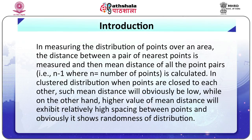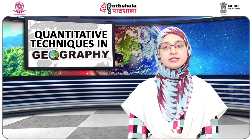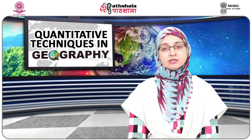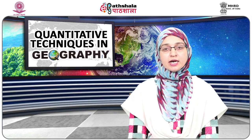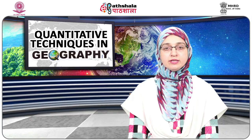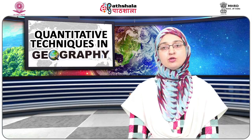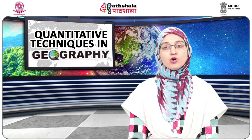Rn depends on two assumptions: (1) all places or locations in an area are equally likely to receive an event, and (2) all events are independent at each location. In cluster distribution, when points are close to each other, the mean distance will be low, while a higher value of mean distance will exhibit relatively high spacing between points, indicating randomness. The Rn value shows results of point distribution, allowing comparison between different point patterns by standardizing for overall density.